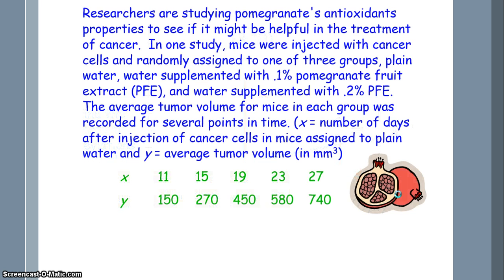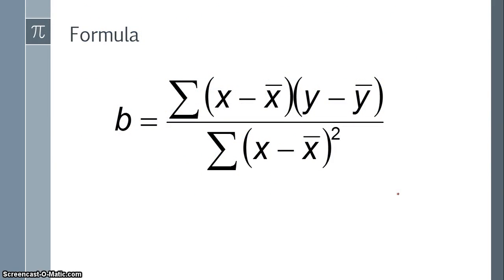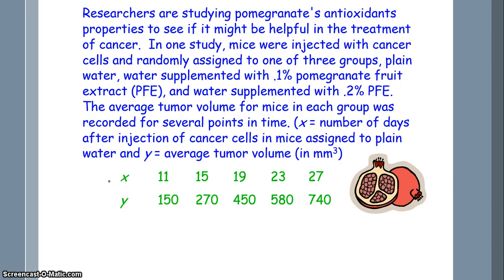So, enough talking about regression lines. Let's do an example problem, right? Researchers are studying pomegranate's antioxidant properties to see if it might be helpful in the treatment of cancer. In one study, mice were injected with cancer cells and randomly assigned to one of three groups: plain water, water supplemented with 0.1% pomegranate fruit extract, and water supplemented with 0.2% pomegranate fruit extract. The average tumor volume for mice in each group was recorded for several points in time, where x is the number of days after being injected with cancer cells, and y is the average tumor volume. So, we're going to take the data from the control group and create a regression line to see if we can predict the size, to help us predict the size of a tumor based on the number of days after a mice is being injected with cancer cells. Now, we won't be able to perfectly figure out what that value would be, but the regression line will get us close to what the actual value will be, and that's how we strive for in regression lines: getting close.